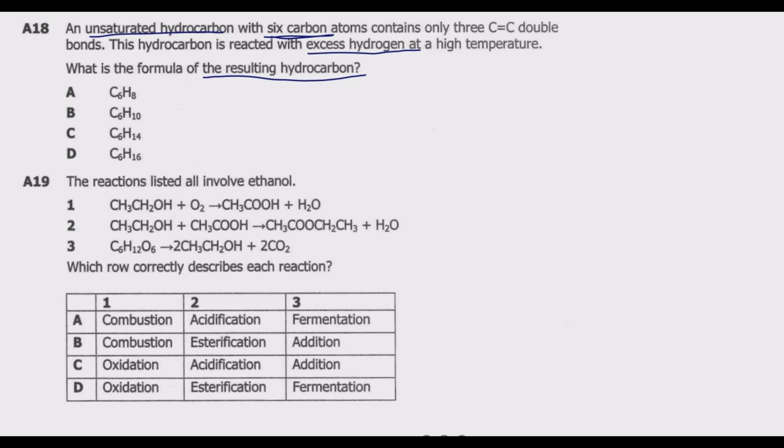Because hydrogen is in excess, we are going to end up with a saturated hydrocarbon with the general formula CnH2n+2, which is alkanes. Because we have six carbons, we replace n with 6. So it will be C6H(2×6+2), which gives us C6H14. So you notice that C is the correct answer.